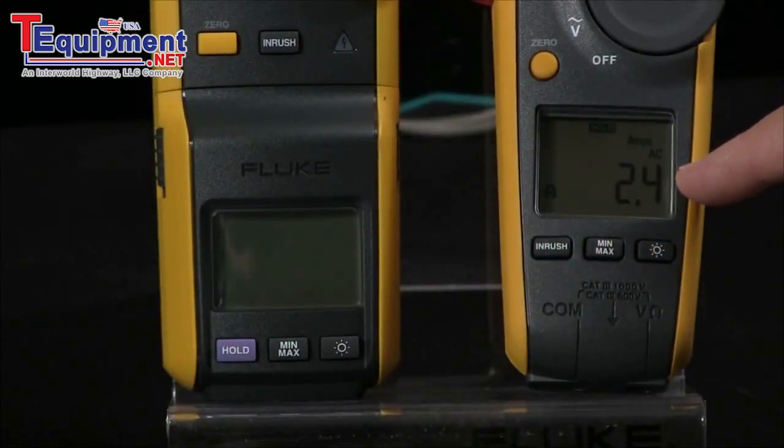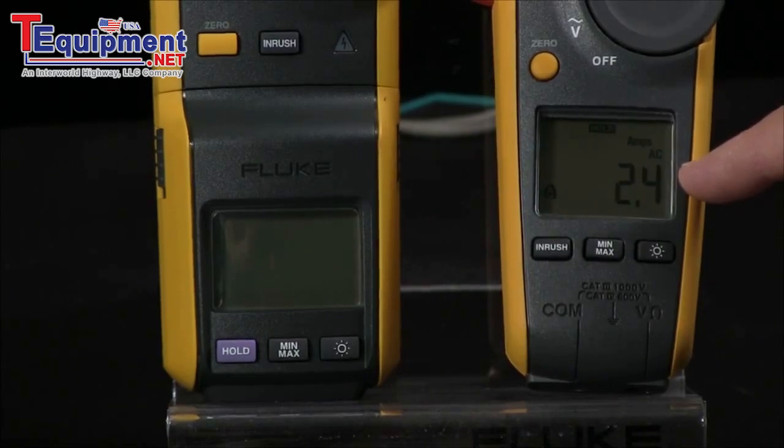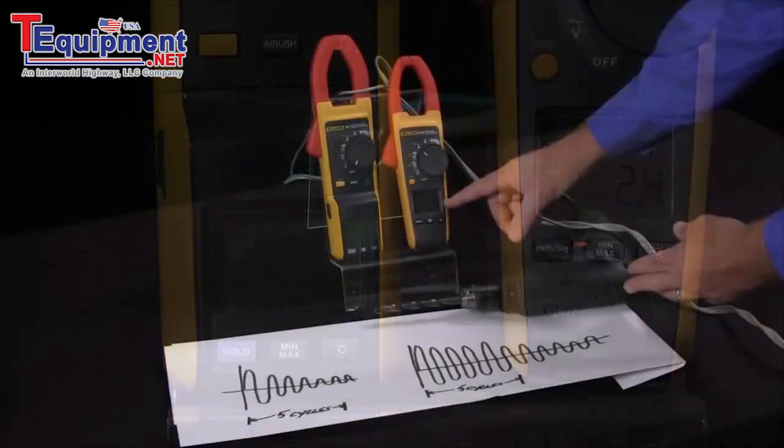So here we have the running current of this particular motor is at 2.4 amps. So what would you expect to see for an inrush current?